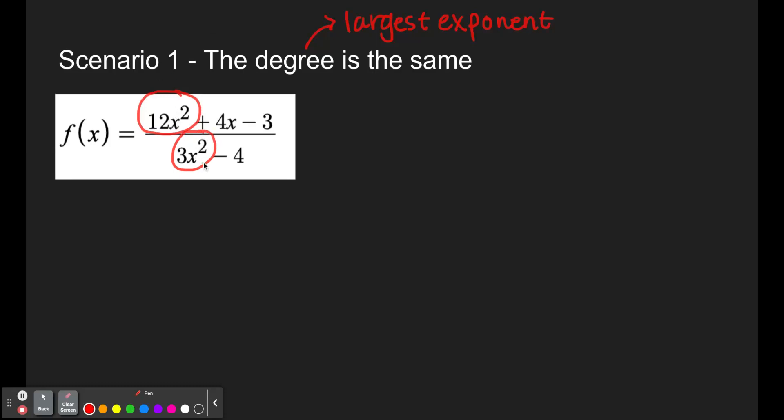So we can see here that as x approaches infinity, this would be the same situation as x approaches negative infinity. f of x is approximately going to follow the same path as 12x squared over 3x squared.